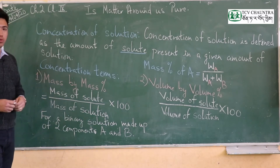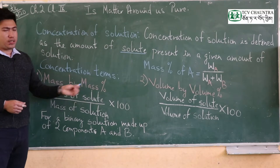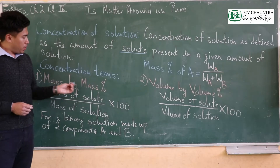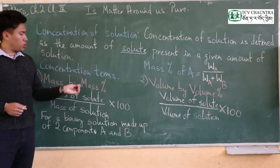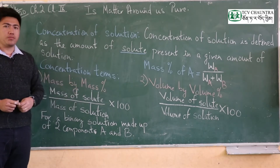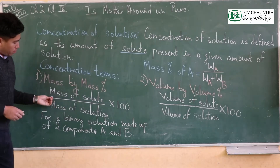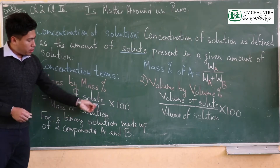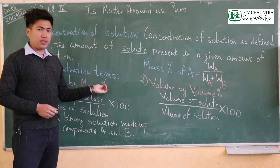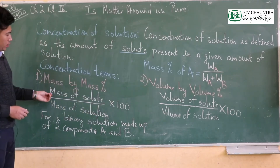Concentration — one way to express it is mass by mass percentage. The formula involves the mass of solute divided by the mass of solution, multiplied by 100 to get the percentage.